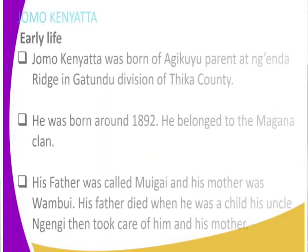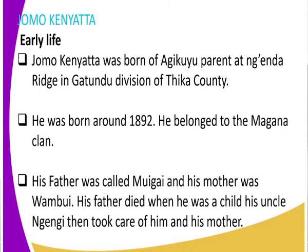Jomo Kenyatta was born of Gikuyu parents, so his parents were of Gikuyu origin. He was born in a place known as Ngenda, in Gatundu division of Thika County — Gatundu South, in Thika County. He was born around the year 1892 and belonged to the Magana clan. Remember, the Agikuyu were divided into clans — they had that clan system.